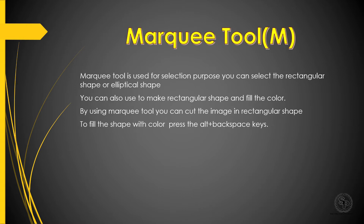The Marquee tool is used for the purpose of selection. You can select a rectangular shape or elliptical shape with the help of the Marquee tool. You can also use it to make a rectangular shape and fill the color, or cut out the image in a rectangular shape.